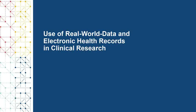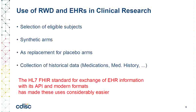First, I will give a very short introduction about the use of real-world data and especially electronic health records in clinical research. An important use of EHRs is the selection of eligible subjects by comparing information such as disease condition, age, procedures obtained, and medications taken against the eligibility criteria in the protocol. More and more, EHRs are also used to generate synthetic arms, for example as a placebo arm where it would be unethical to expose patients to placebo treatment, such as in cancer studies. One may even question whether providing people a placebo vaccination during a pandemic is ethical. Collection of prior medications and medical history can be much more easy and accurate when the patient has an electronic health record that documents all these.